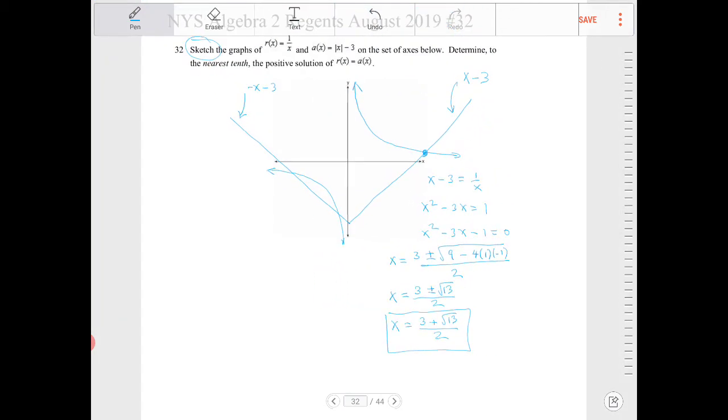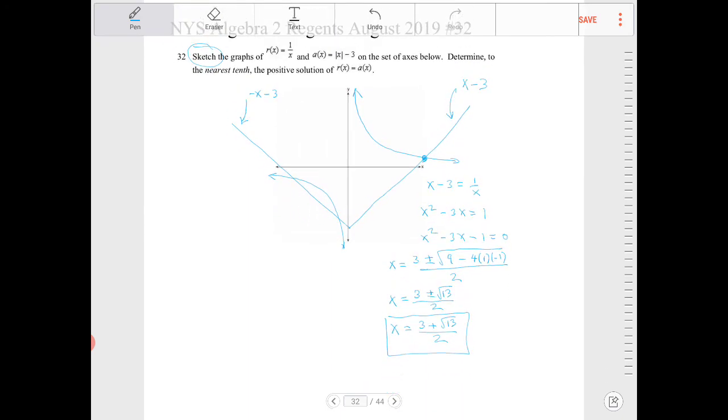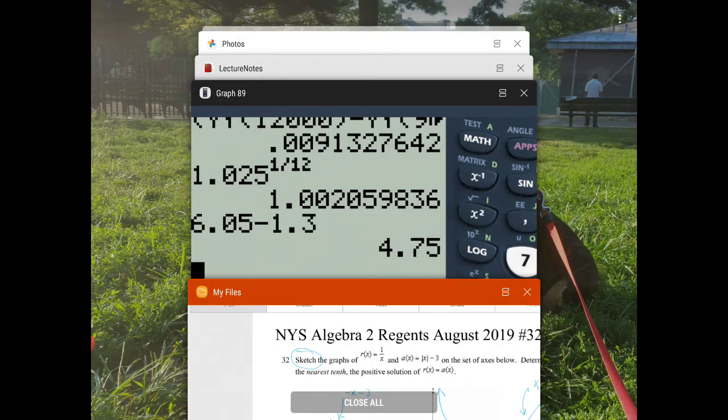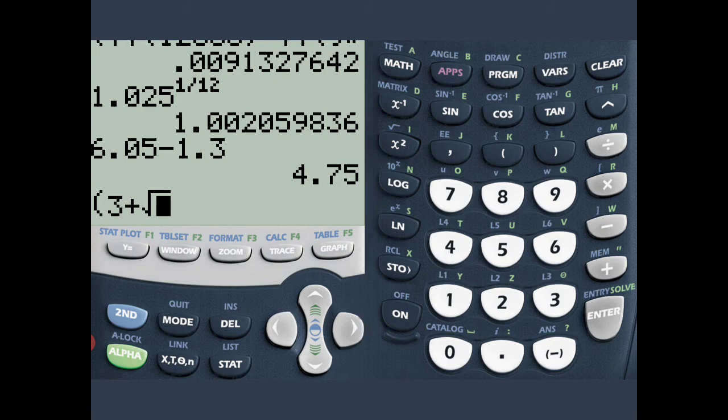And the question here says to find the answer to the nearest tenth. So that's what I'm going to do. I'm going to enter that into the calculator. So 3, open parenthesis 3, plus square root of 13, divided by 2.